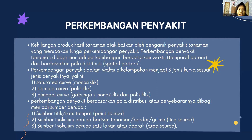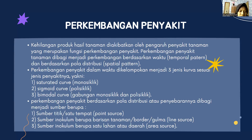Perkembangan penyakit. Kehilangan produk hasil tanaman diakibatkan oleh pengaruh penyakit tanaman yang merupakan fungsi perkembangan penyakit. Perkembangan penyakit tanaman dibagi menjadi perkembangan berdasarkan waktu atau temporal pattern dan berdasarkan pola distribusi atau spatial pattern. Perkembangan penyakit dalam waktu dikelompokkan 3 jenis kurva sesuai jenis penyakitnya yakni stator, kurva monosiklik, kemudian sigmoid kurva atau polisiklik, lalu ada juga bimodal kurva yang merupakan gabungan monosiklik dan polisiklik.